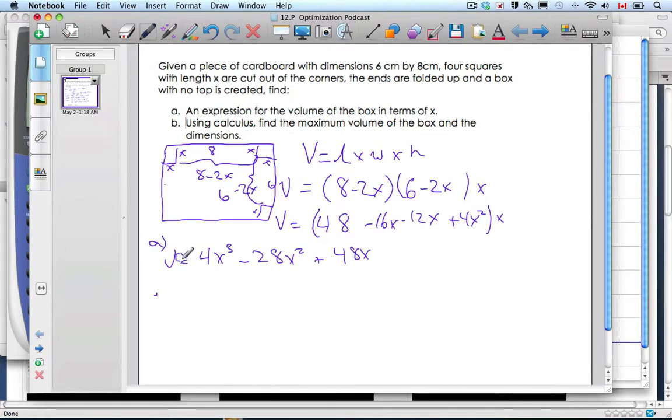So now volume is a function of x, V(x). Part b, use calculus to find the max volume of the box and the dimensions. So the maximum or optimizations, that's first derivative. We want to find a maximum so for the first derivative we differentiate, we get 12x² minus 56x plus 48.